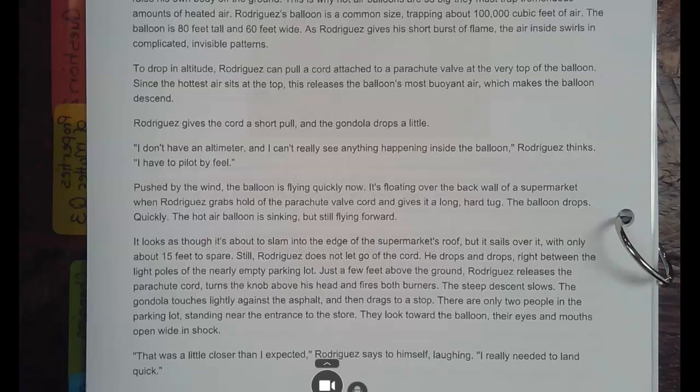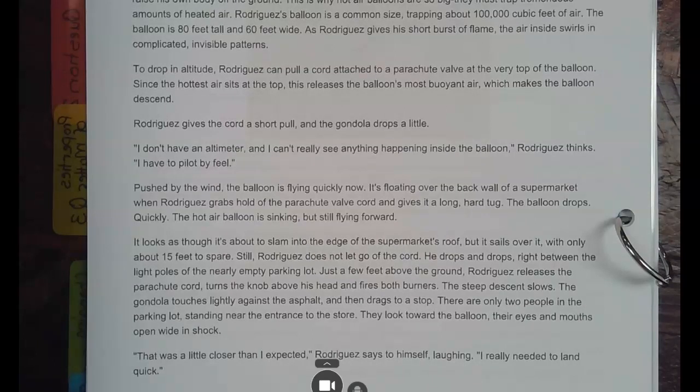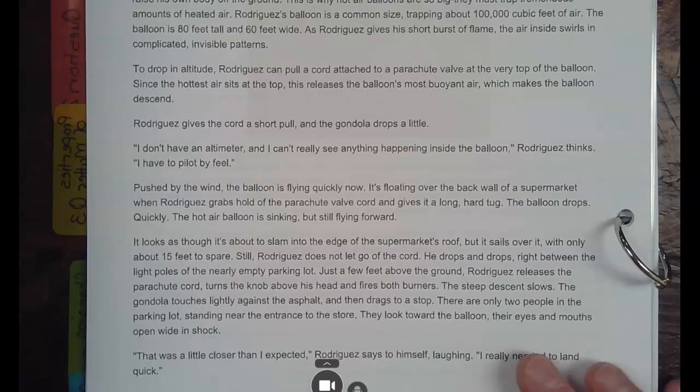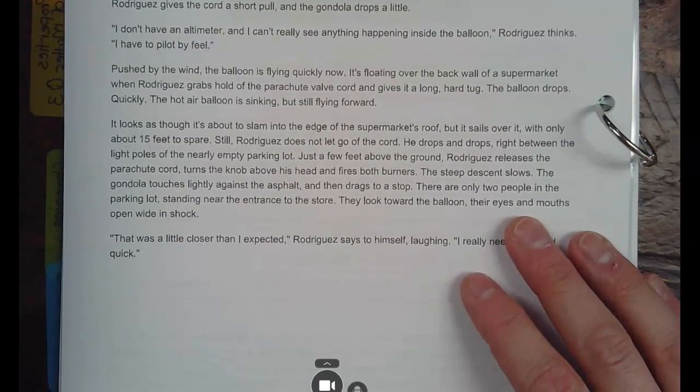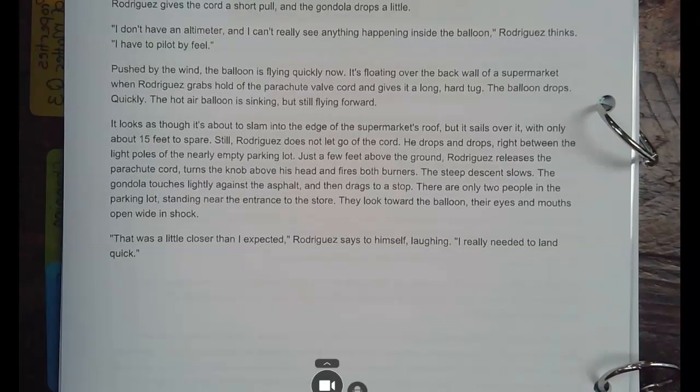Since the hottest air sits at the top, this releases the balloon's most buoyant. Buoyant means lifting air, which makes the balloon descend. Rodriguez gives the cord a short pull, and the gondola drops a little. I don't have an altimeter. Altimeter tells how high or low you are. And I can't really see anything happening inside the balloon. Rodriguez thinks, I have to pilot by feel.